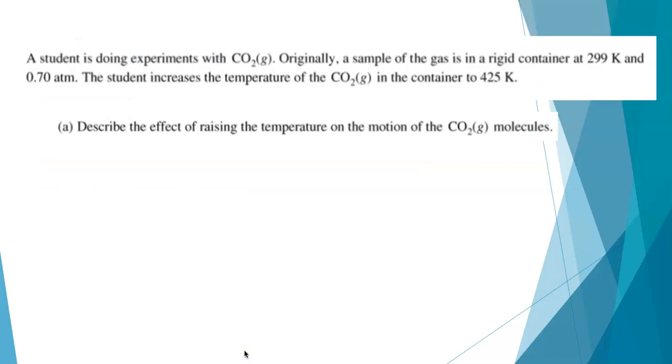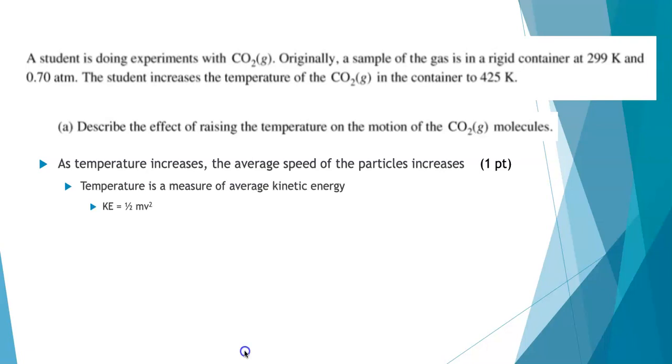A student is doing experiments with carbon dioxide gas, with a sample of the gas in a rigid container at 299 Kelvin and 0.70 atmospheres. The student increases the temperature of the gas to 425 Kelvin. Part A asks, describe the effect of raising the temperature on the motion of the carbon dioxide molecules. Your answer here really needs to relate to kinetic theory. The temperature is going up from 299 Kelvin to 425 Kelvin, and that means the average speed of the particles is going to increase. And that's really what you needed to say here. So your question really needed to relate to the motion of the molecules. If you want to expand on this a little further, temperature is a measure of average kinetic energy, and we know that kinetic energy equals one-half mv squared. So if your kinetic energy is going up, it means your average velocity is going up. But for the point, this was a one-point question, this first bullet point—as temperature increases, the average speed of the particle increases—is really what you needed to write down.